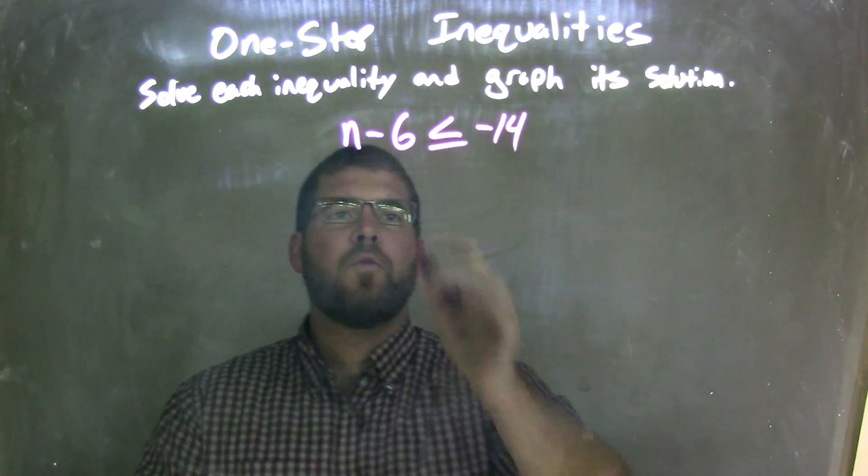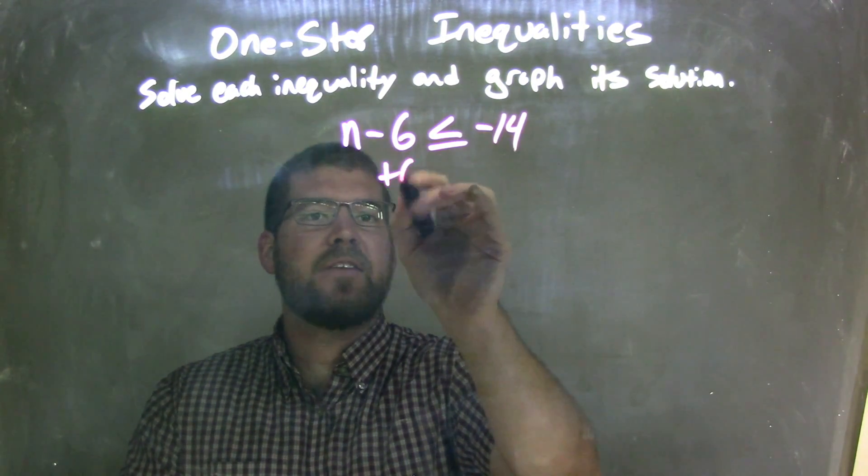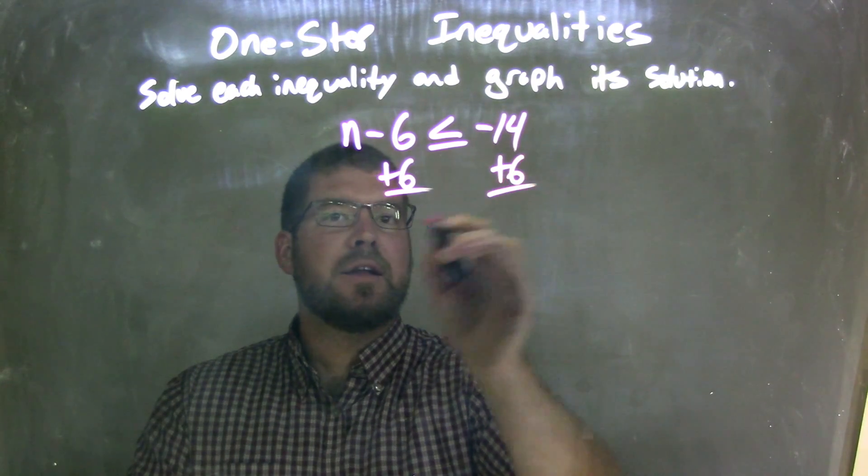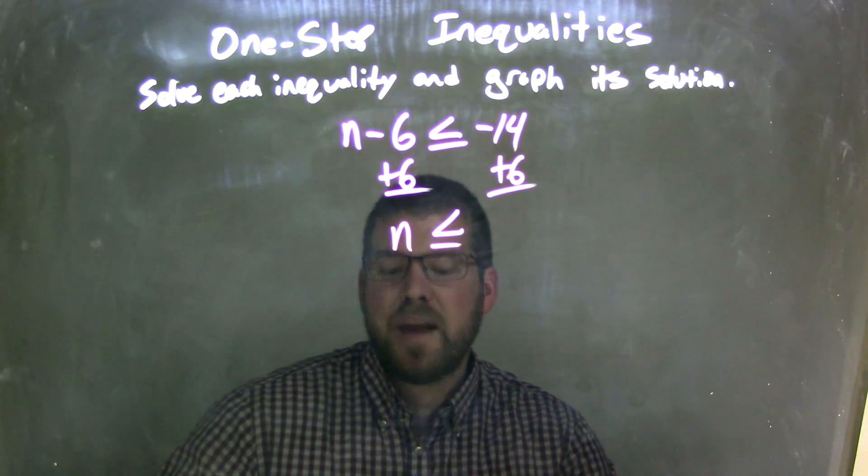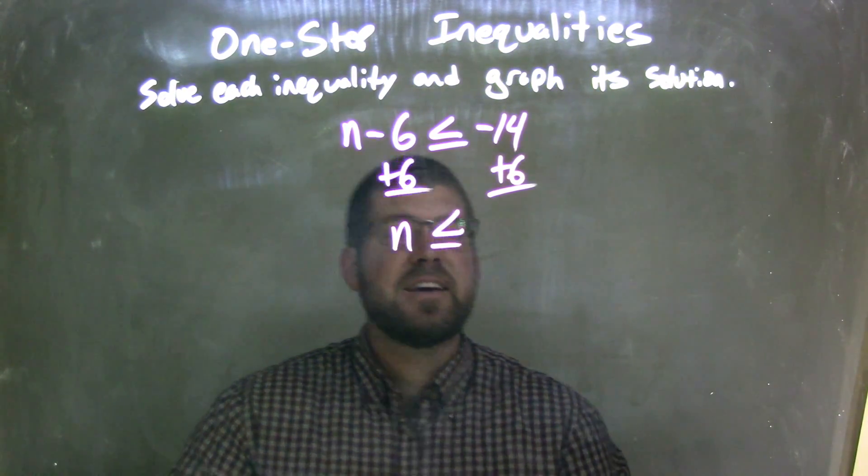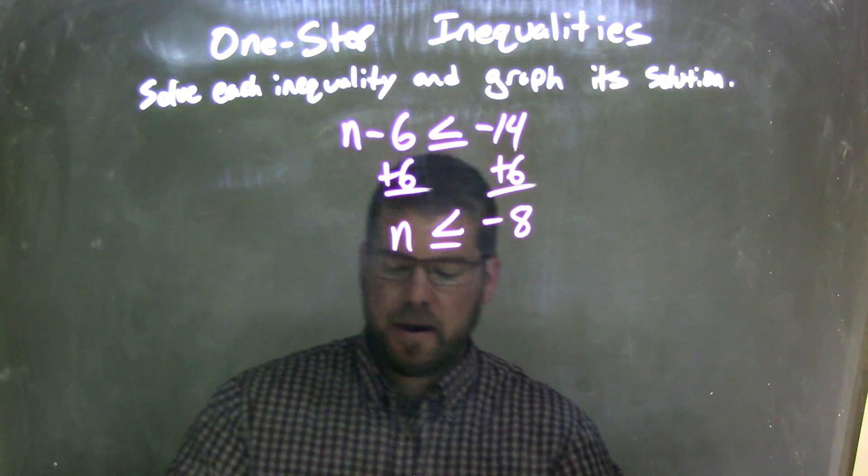Okay. Well, first thing, I'm going to bring the 6 over, so I'm going to add 6 to both sides, leaving me with n by itself is less than or equal to... well, it's negative 16, I'm sorry, negative 14 plus 6, and we're looking at negative 8 there.